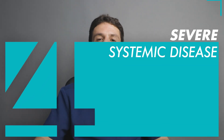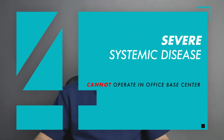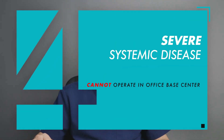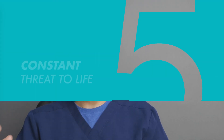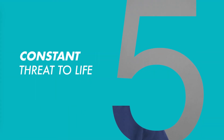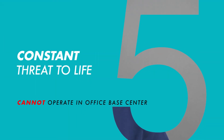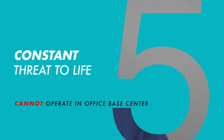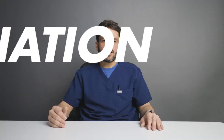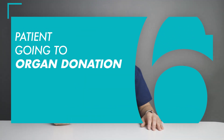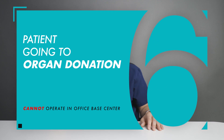An ASA 4 patient has a severe systemic disease. An ASA 5 patient is a constant threat to life and will not survive without a procedure. ASA 6 is a patient who is going in for organ donation.